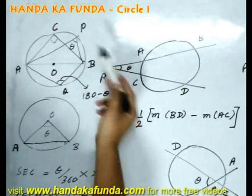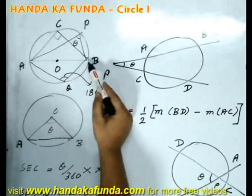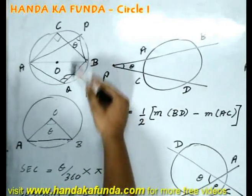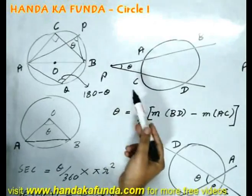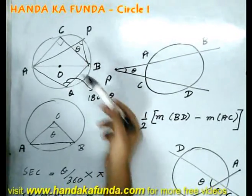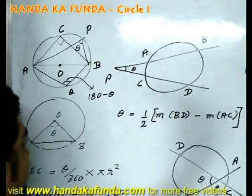If I am given a quadrilateral PAQB, then its opposite angles are always supplementary. That means if one is theta, another one will be 180 minus theta.